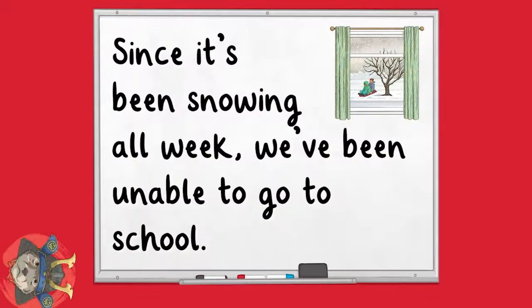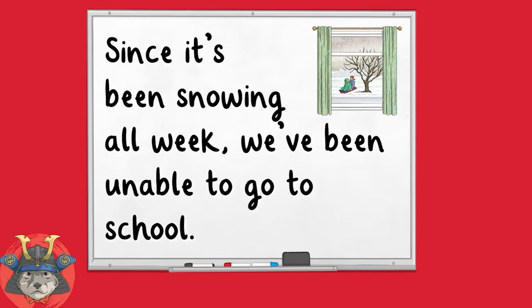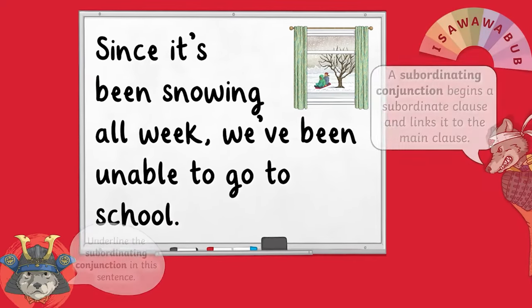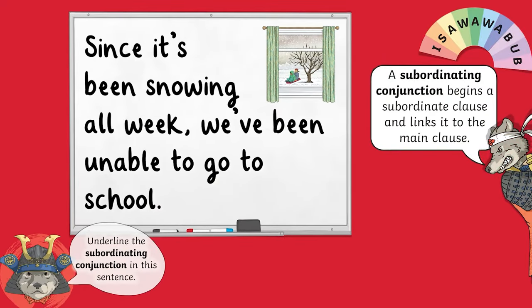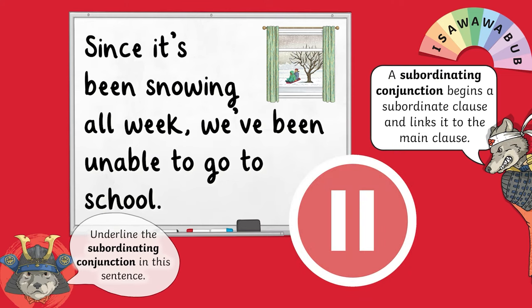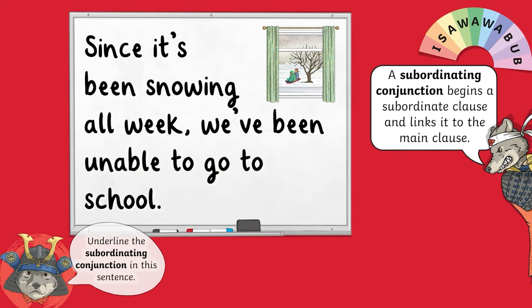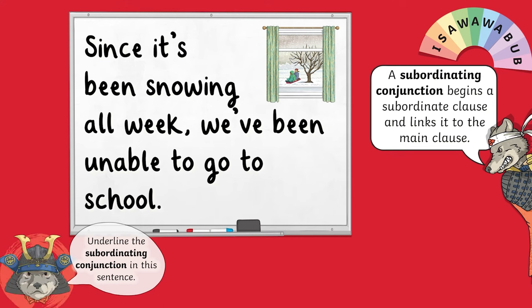Take a look at this question. You are being asked to underline the subordinating conjunction. 'Since it's been snowing all week, we've been unable to go to school.' In this sentence, the subordinate clause is at the beginning of the sentence. This means that 'since' is the subordinating conjunction — the word being used to link the subordinate clause to the main clause.